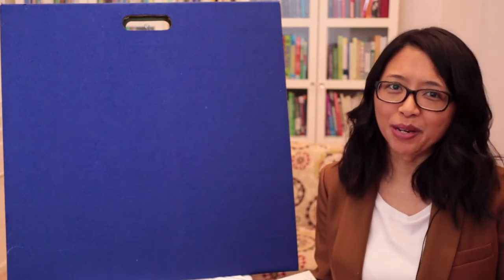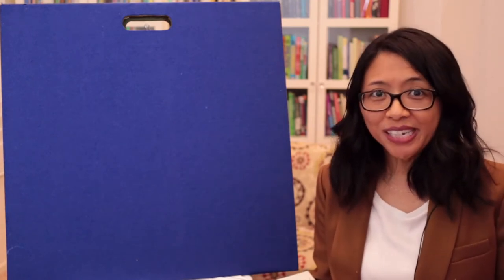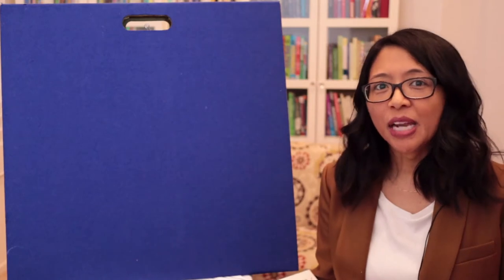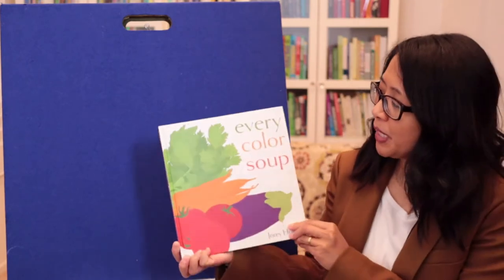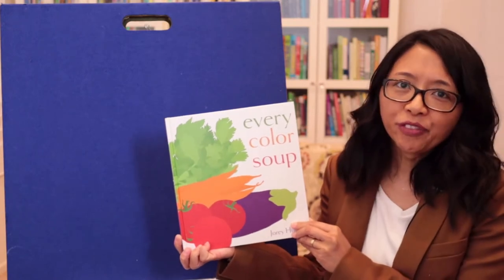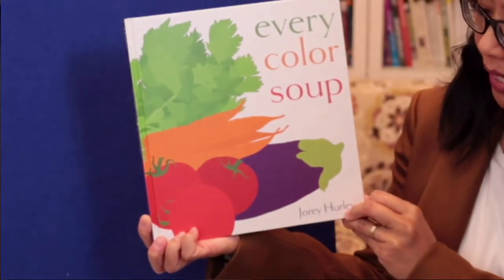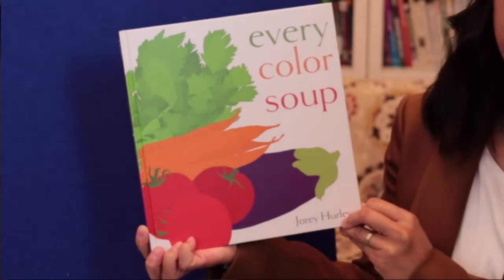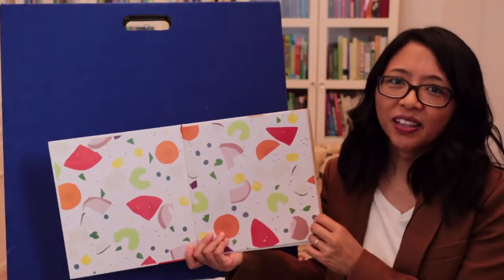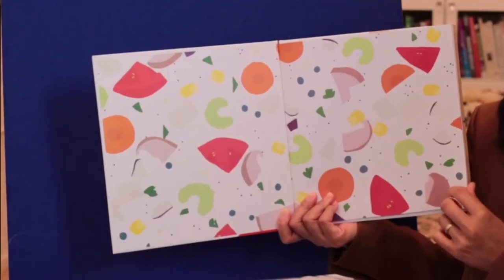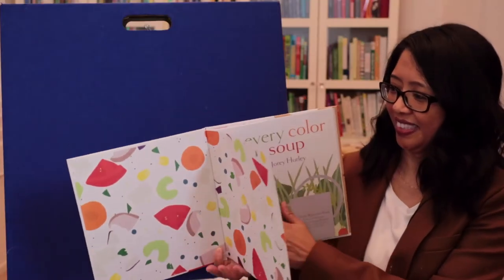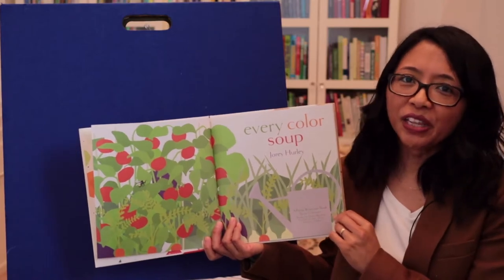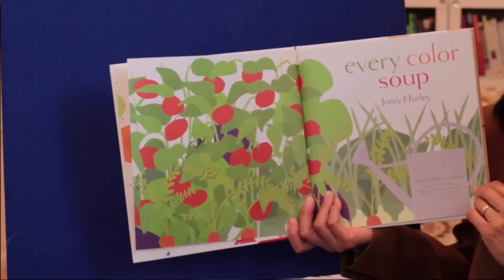Hi library friends, it's Miss Vivian from the Casa Verdugo Library. November is picture book month and with permission from Simon & Schuster, I'm happy to share with you Every Color Soup written and illustrated by Jory Hurley. Look at the beautiful colorful pieces of vegetables. Every Color Soup by Jory Hurley.